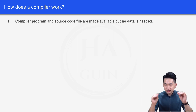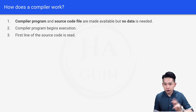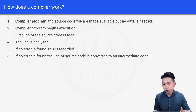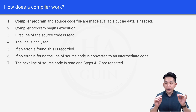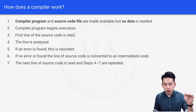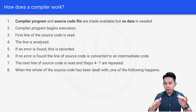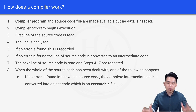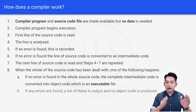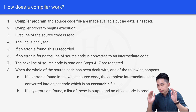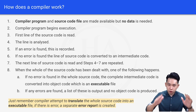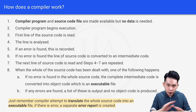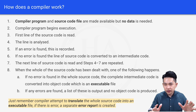How does a compiler work? The compiler program and source code file are made available, and then the compiler begins execution. The first line of the source code is read and analyzed. If an error is found, it is recorded. If no error is found, the line is converted to intermediate code. The next line is then read and this process repeats. When the whole source code has been processed: if no errors are found, the complete intermediate code is converted into object code, which is an executable file. If any errors are found, a list is output and no object code is produced. In summary, the compiler translates the whole source code into an executable file; if there are errors, it produces an error report instead.